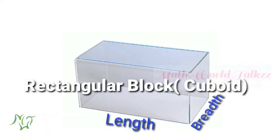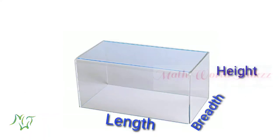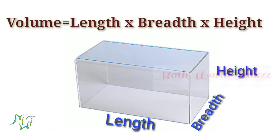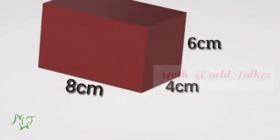This is a rectangular block. It is having length, breadth, and height, and we can find out the volume of the rectangular block by multiplying these dimensions. That is, volume is equal to length into breadth into height.